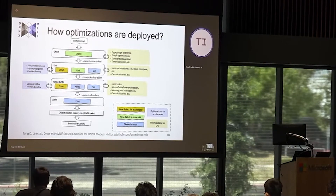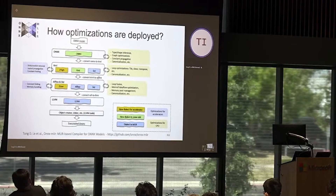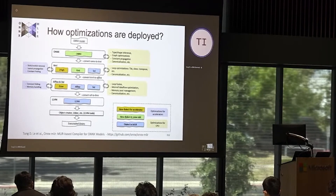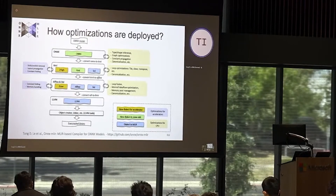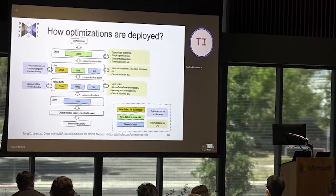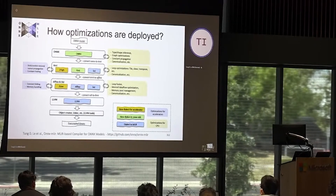At the high level, we have high-level optimizations such as shape inference or graph-level optimization. At other levels, we have optimizations for CPU operations and accelerator operations. Some optimizations can be applied at multiple levels, such as constant folding or canonicalization.